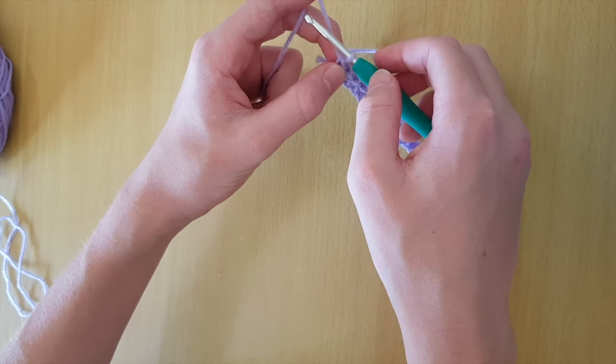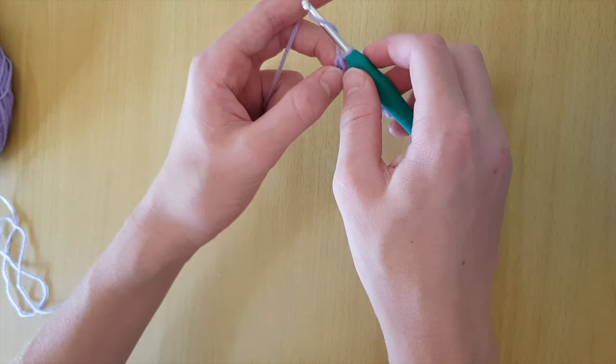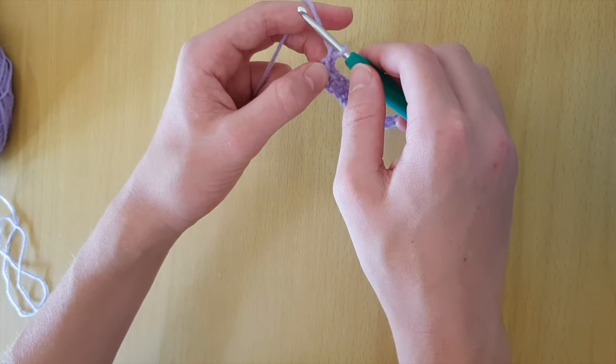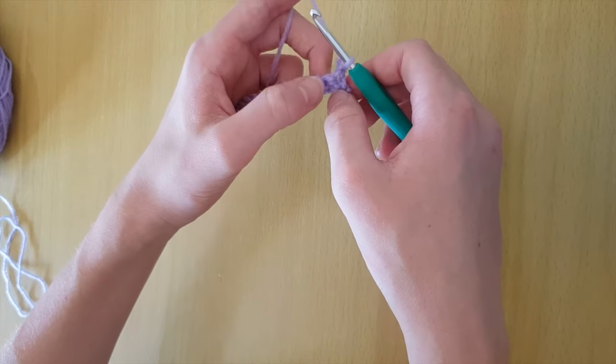Now you need to make a turning chain of 1, just like how we added the extra chain at the start of our foundation chain. Wrap around, pull through, and turn your work so then you are working right to left again.